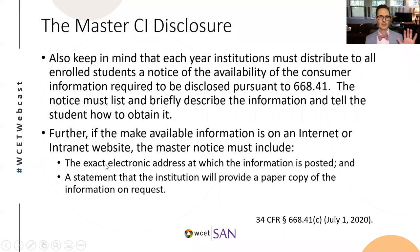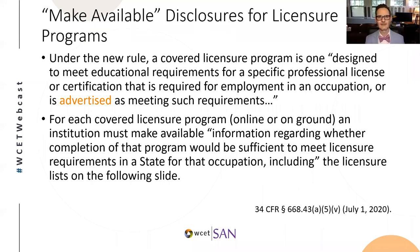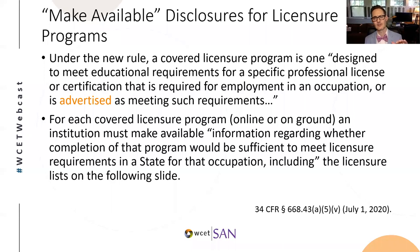We've talked about what the department is doing — taking these requirements and moving them into the main consumer information framework — and how that means when thinking about annual consumer information disclosures, you need to think about professional licensure. Now let's get specific about what's required in the professional licensure context. The department has specified certain disclosures as make available disclosures and certain others as direct disclosures. Let's start with the make available disclosures under the new rule.